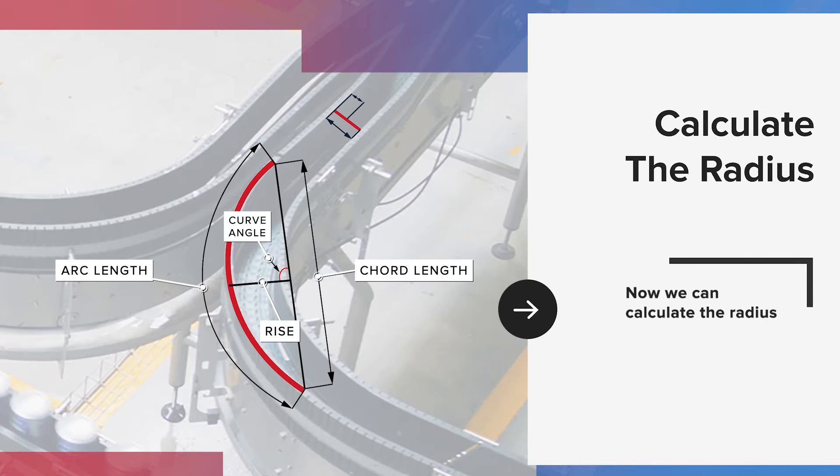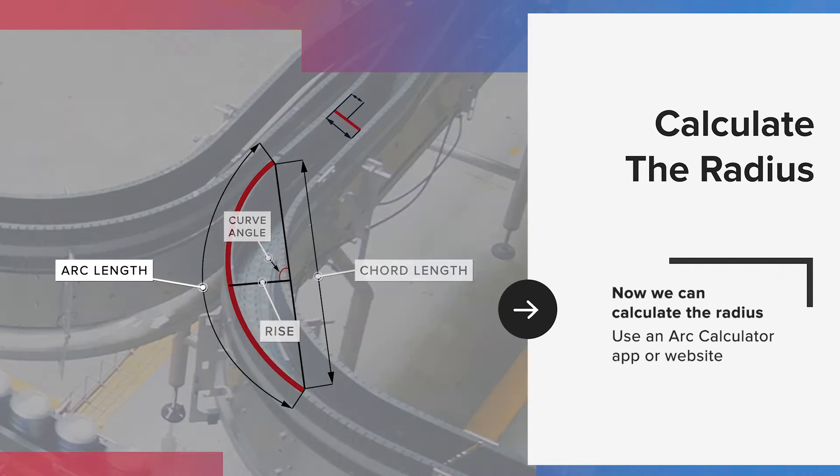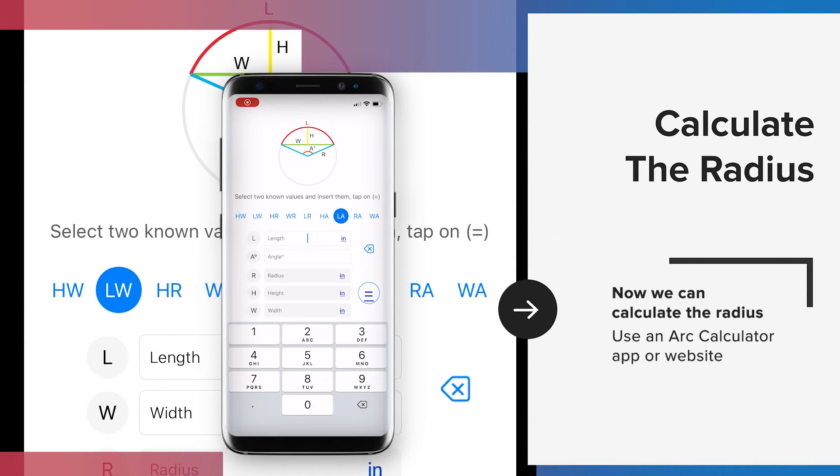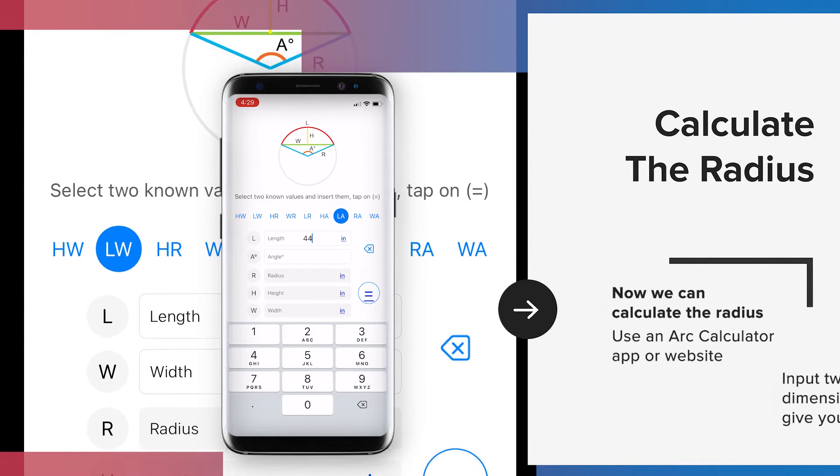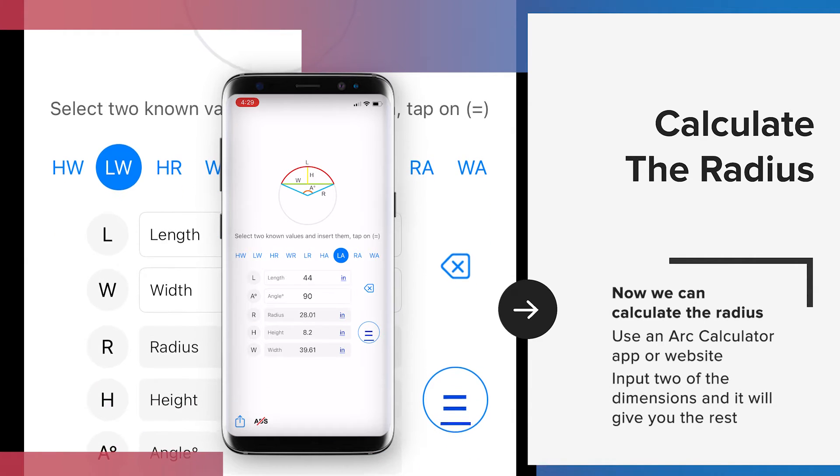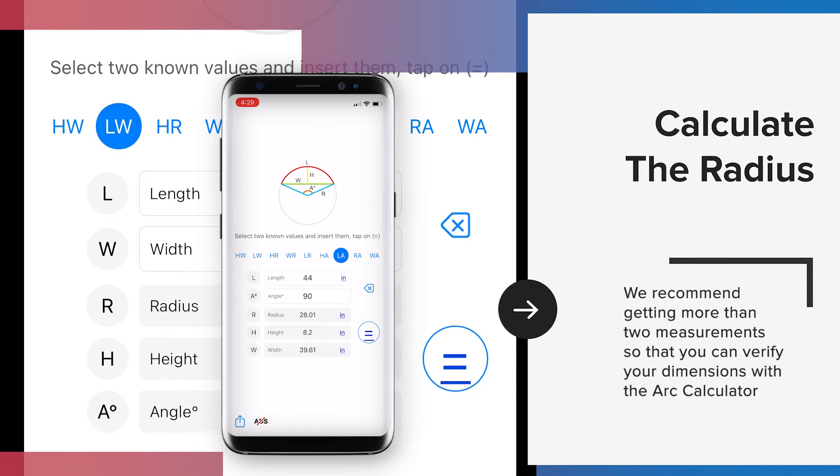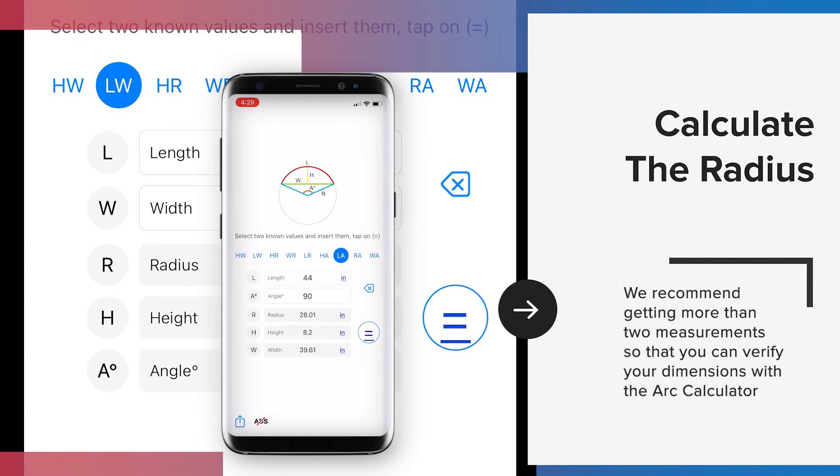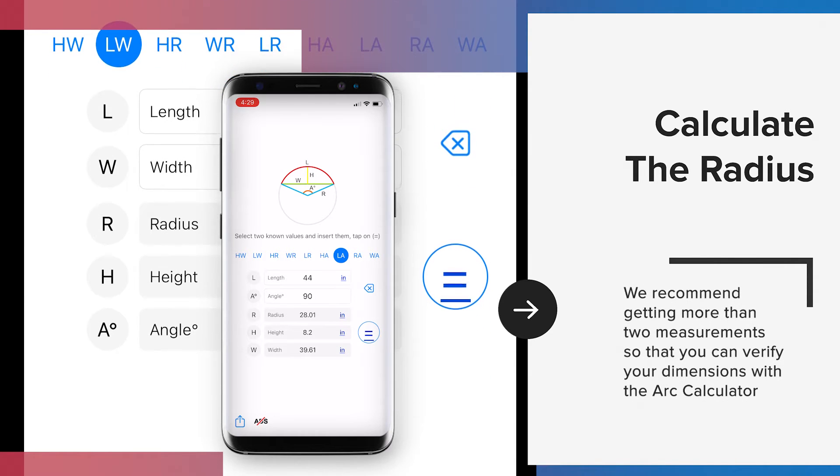Now that we have a combination of two or more dimensions of arc length, chord length, curve angle, and or rise, we can calculate the radius. The easiest way to do this is to use an arc calculator app or website. You will input two of the dimensions into the calculator and it will give you the rest. While you are physically measuring the curve, we recommend getting more than two measurements so that you can verify your dimensions with the arc calculator.